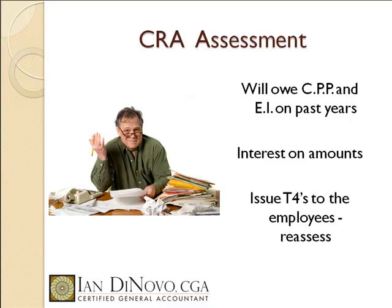First, you will owe the CPP and EI on the years being audited. The business is responsible for matching the company's CPP and remitting 1.4 times the EI on any employees. So if your contractors are determined to be employees, the CRA is going to assess you for these amounts. They could also assess you for the employee's CPP and EI that should have been remitted. Not only do you owe the CPP and EI on the business's portion, but they'll assess you for the employee's CPP and EI, which you should have collected and remitted on their behalf. Then you can try to get that CPP and EI back from the employee.